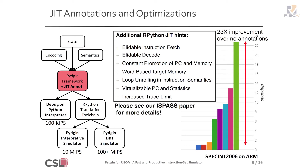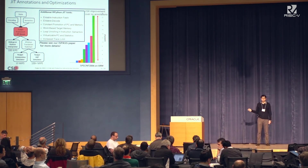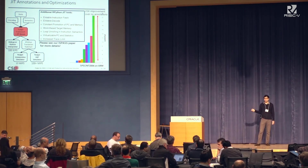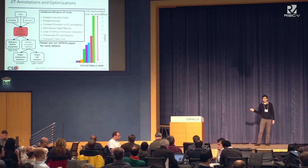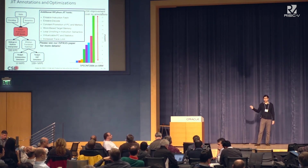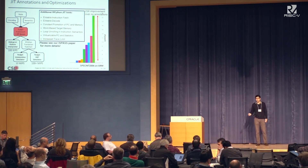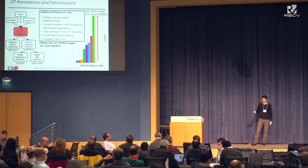Please see our ISPASS paper for details. An important point is that most of the optimizations we added are in the Pigeon framework alone and do not touch the ADL — the architecture description language. So if you want to write a new ISA or experiment with new extensions, they will benefit from these optimizations automatically.